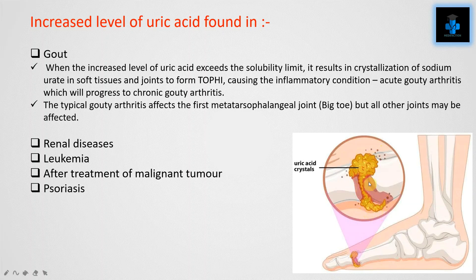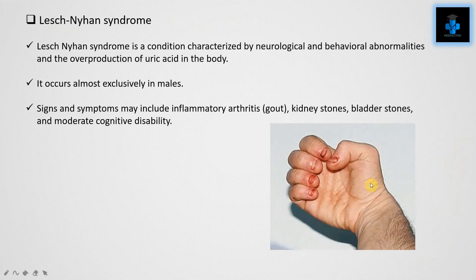Lesch-Nyhan syndrome is a condition characterized by neurological and behavioral abnormalities and the overproduction of uric acid in the body. It occurs almost exclusively in males. The signs and symptoms may include inflammatory arthritis (gout), kidney stones, bladder stones, and moderate cognitive disability.